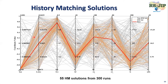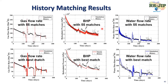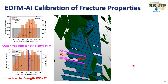We ran 300 combinations of real simulations and found 55 solutions. The yellow color represents our solutions, and the red color is the best match representing the most likely combination. The history match results show all 55 matches give a pretty good fit, and we can identify the best match. The history match is not the only goal — more importantly, we want to do calibration. We can calibrate fracture half length, showing P10, P50, and P90. From P50, we see the outer fracture half length is around 130 meters and the middle one is 52 meters. Using EDFM-AI we can also calibrate fracture height — very difficult to calibrate using diagnostic data alone — with P50 around 9 meters.